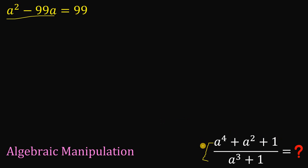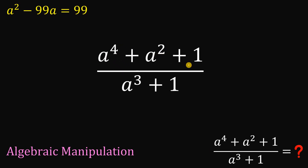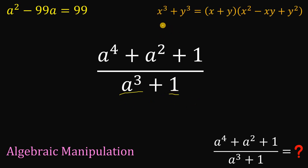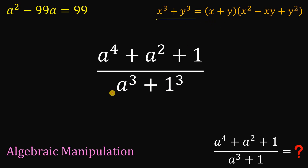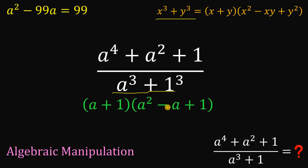To do that, we will first simplify the expression we want to evaluate. Let's take a to the fourth power plus a squared plus 1, all over a cubed plus 1. For the denominator, we have a cubed and 1, which we can rewrite as 1 cubed. So we can apply the sum of two cubes identity to factor this out, giving us a plus 1 multiplied by a squared minus a plus 1.